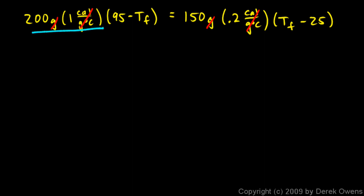Notice I have this term multiplied by 95 minus Tf, so I have to distribute. This is really just 200, because 200 times 1 is 200. So 200 times 95 minus 200 times Tf. 200 times 95 is 19,000, so I have 19,000 minus 200 Tf.